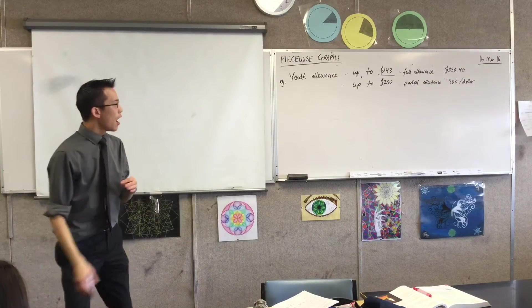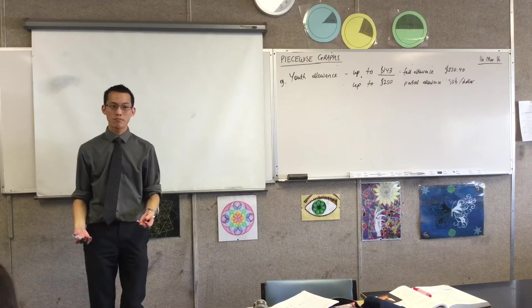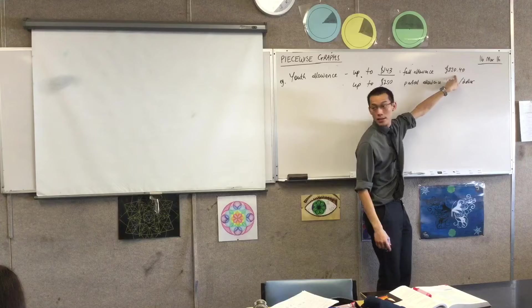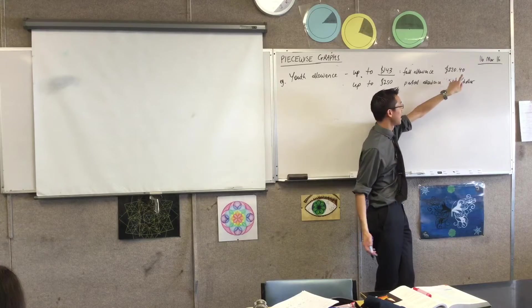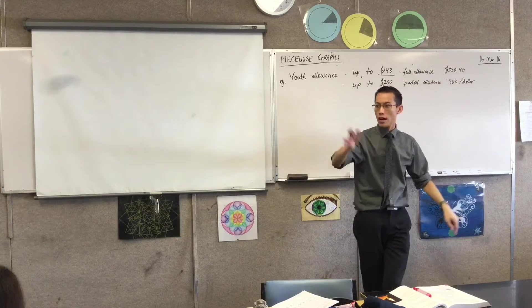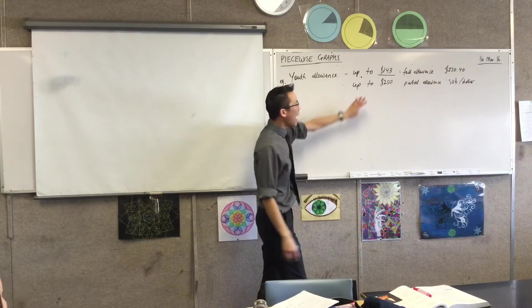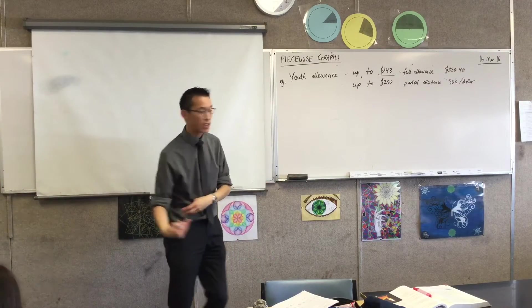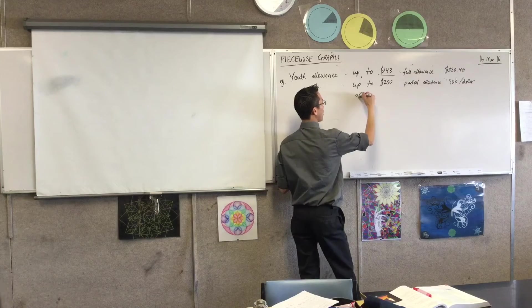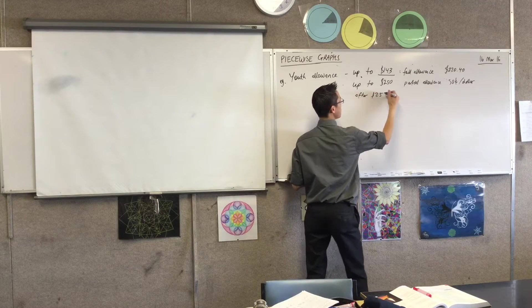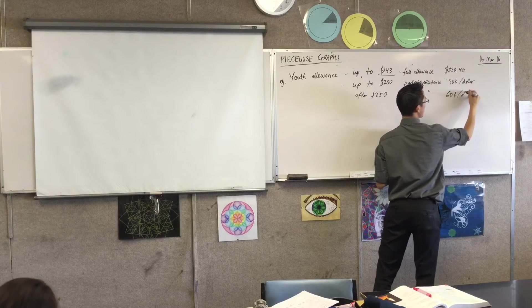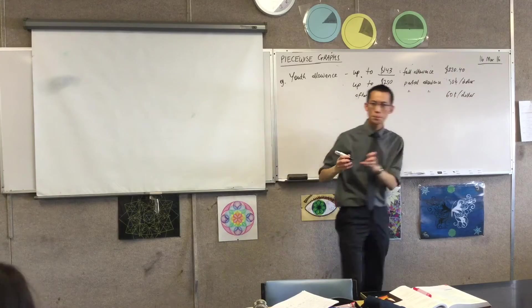Correct. That's right. So, $144, right? You're earning $144, they're going to take $0.50 off of this. $145, they're going to take $1 off of that, and on, and on, and on. But after $250, they start to become a little more aggressive. They take more money off you, right? So, after $250, it's still a partial allowance, but $0.60 is removed per dollar.